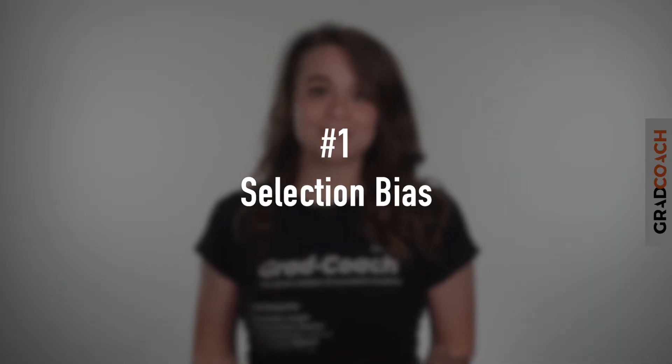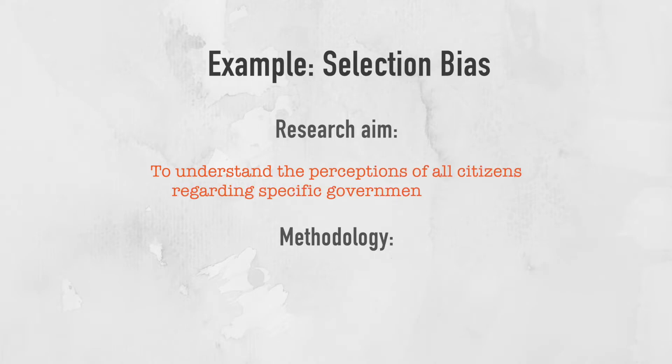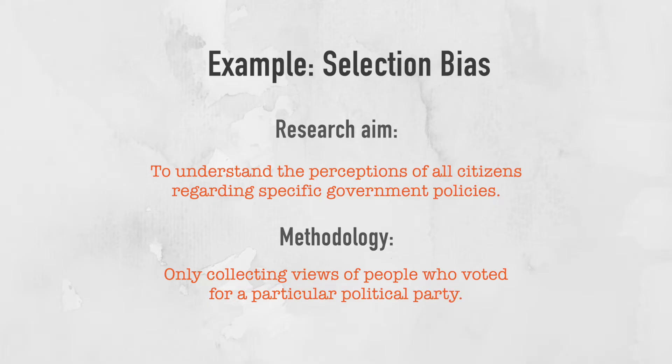First up, we have selection bias. The earlier example about only surveying management as opposed to all levels of employees is a prime example of this type of research bias. Selection bias occurs when your study's design automatically excludes a relevant group from the research process and therefore negatively impacts the quality of the results. The results of your study will be biased towards the group it includes or favors, meaning you are likely to arrive at prejudiced results. For example, research into government policies that only includes participants who voted for a specific party is going to produce skewed results, as the views of those who voted for other parties will be excluded.